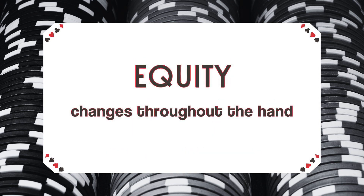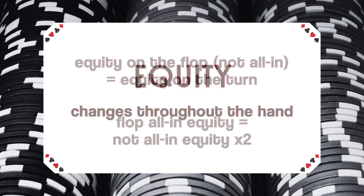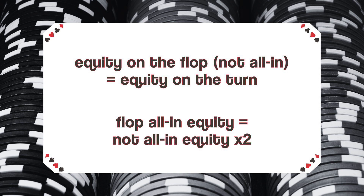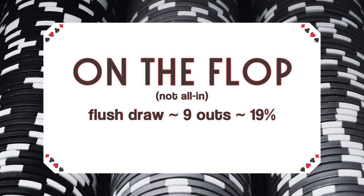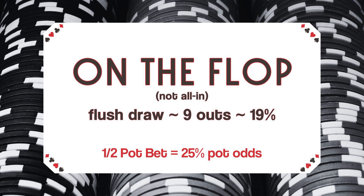But don't forget: you don't want to play every hand, because equity changes throughout the hand, and making plus EV decisions is no guarantee of a win. The next thing you need to know is that if you're facing an all-in bet on the flop, you have double the equity — it's like adding the equity you have on the flop and the turn together, because you're getting two cards for your all-in bet. For example, if you have a flush draw on the flop — four cards of the same suit — you have nine outs or 19% equity, which makes a half-pot bet at 25% pot odds a negative EV decision if it's not all-in. But if that half-pot-sized bet puts you or the other player all-in, your nine outs become 38% equity, and it would be a plus EV decision.